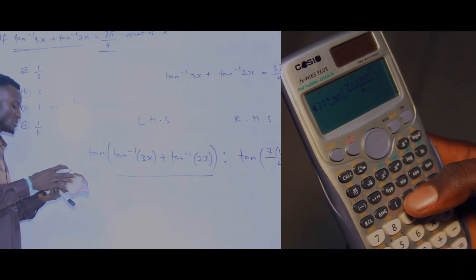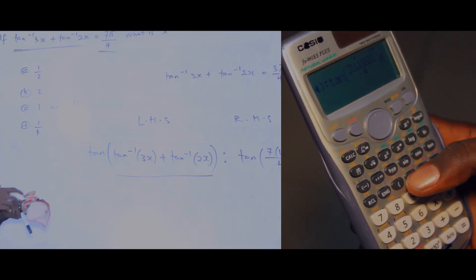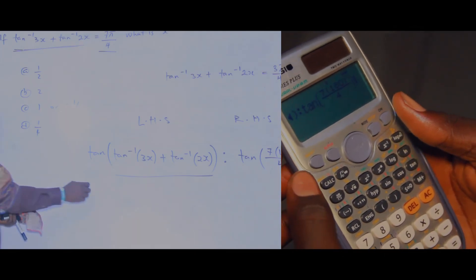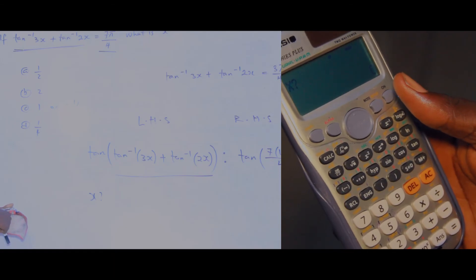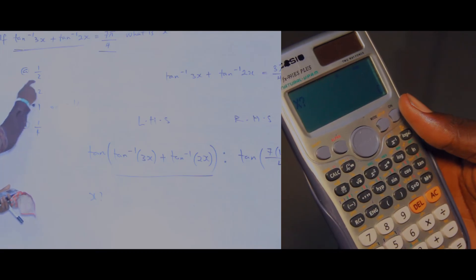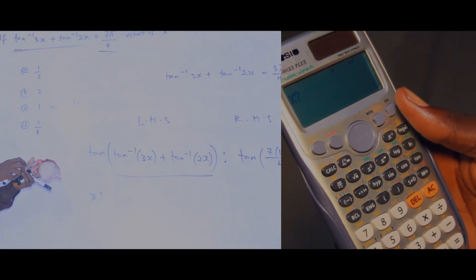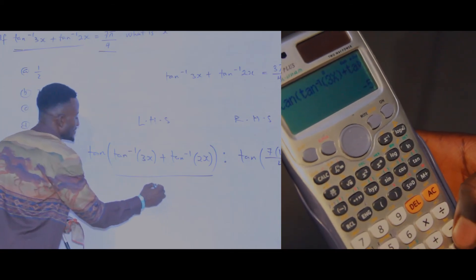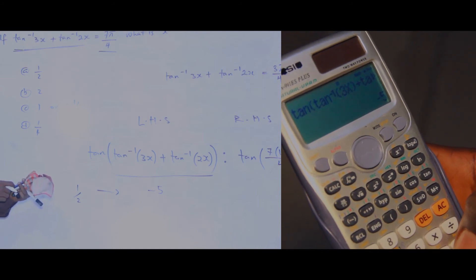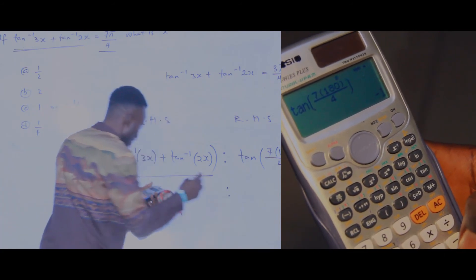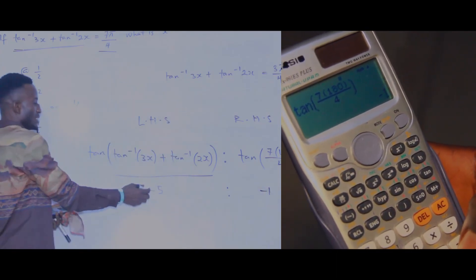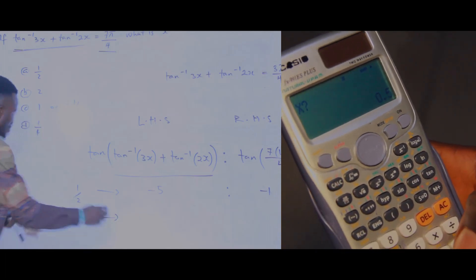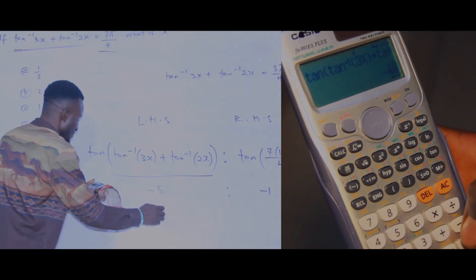Now let us go to the options. We insert the options one after the other. Press calculate — it will give you x with a question mark. Now insert the options one after the other. The first option is one over two, so press 1 divided by 2, then press equals. You observe it gives the left side as minus 5. Press equals again and you see the right side is minus 1. They are not equal. Press calculate again and go to option B — press 2, then equals. The value you get is minus 10 over 23.